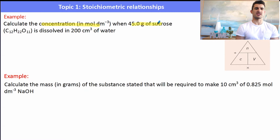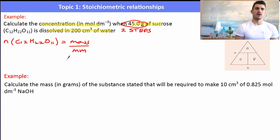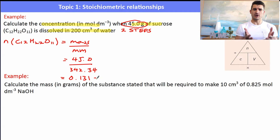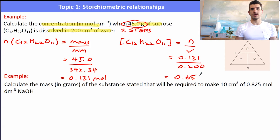Another example: calculate the concentration in mol/dm³ when 45 g of sucrose is dissolved in 200 cm³ of water. This is a two-step process. Step 1: find moles — n = 45 / 342.34 = 0.131 mol. Step 2: [sucrose] = 0.131 / 0.200 dm³ = 0.657 mol/dm³.